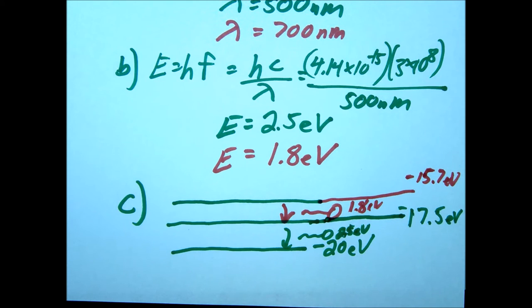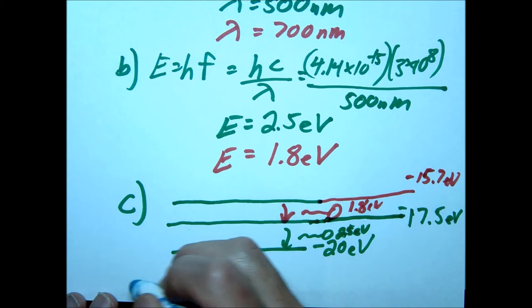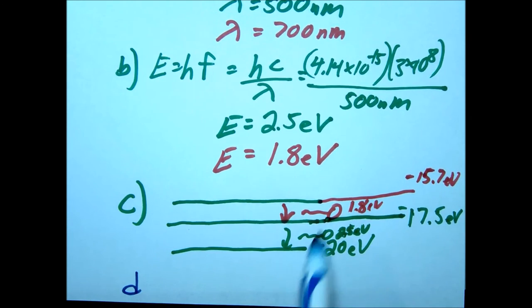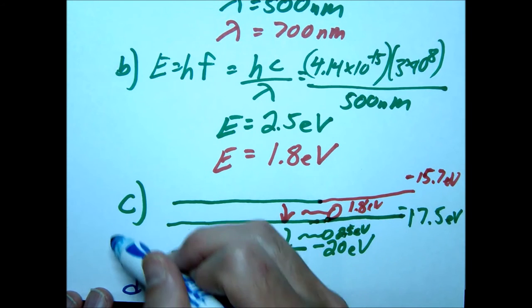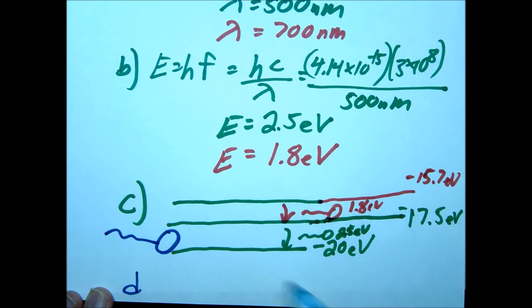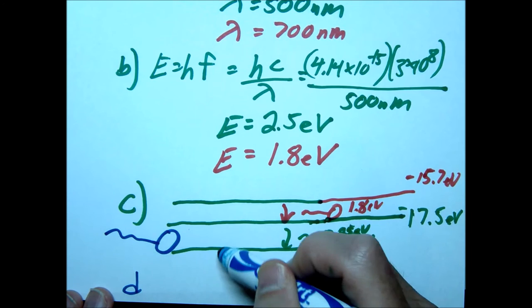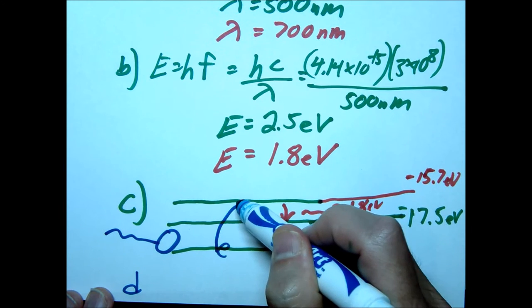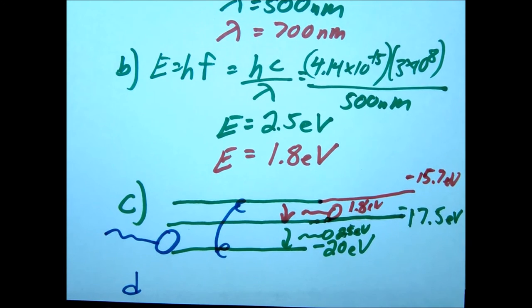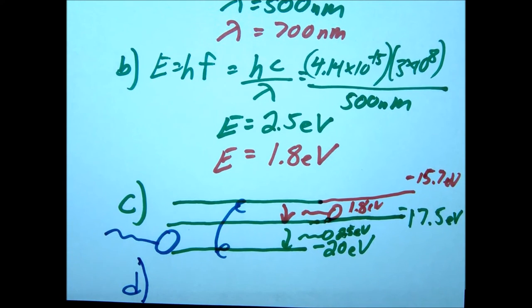Lastly, letter D. Letter D is essentially saying, what if I want to excite this with a photon? I'm going to take one photon and excite it from the ground all the way up to the third level. Then it's going to relax back down and release two photons. The question is, what is the wavelength of that one photon? If you haven't answered that yet, take a moment to do it.